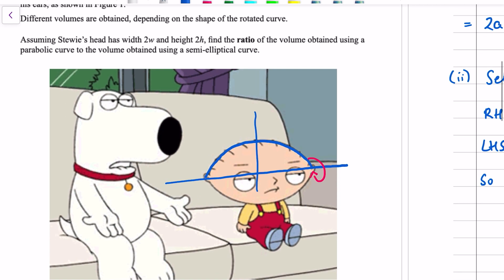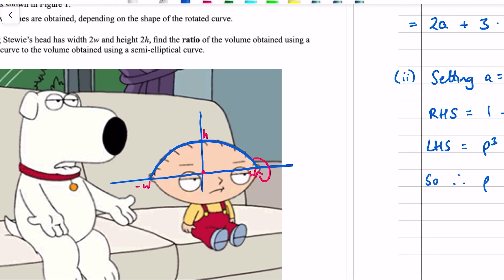So the first thing is, we need to come up with the equation. We're told Stewie's head has a width of 2w and a height of 2h. So, if we set the origin to be the middle of his head, then we've got minus w there, w there, and h there. Okay, let's find the equations first.